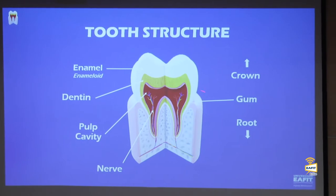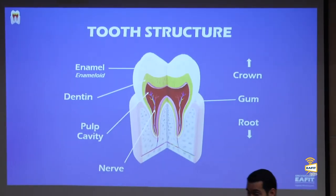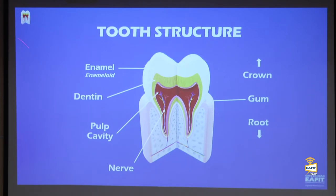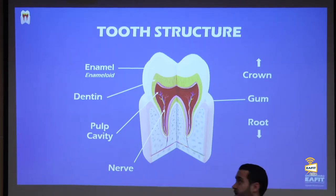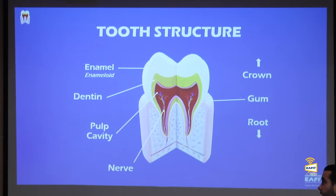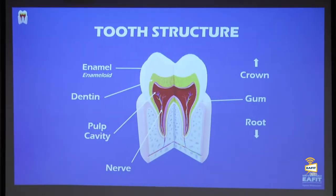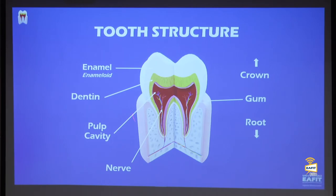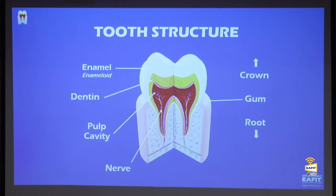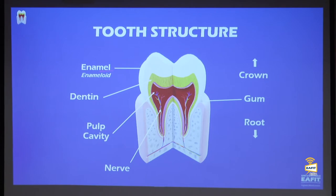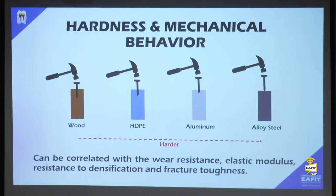Looking at the tooth structure: on the right you see the gum — everything above the gum line is the crown, everything below is the root. The outer layer is the enamel (called enameloid in some animals). If the mineral phase is hydroxyapatite it's enamel; if it's fluorapatite it's enameloid — found in fish, while mammals and reptiles have enamel. The dentine is the inner layer between the pulp cavity and the enamel, thicker with less mineral content.